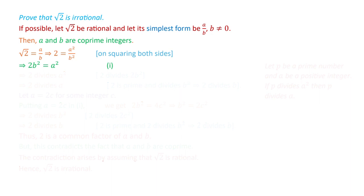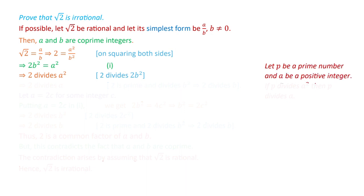Now, look at the term 2b squared — clearly it is divisible by 2. So if 2b squared is divisible by 2, it means 2 divides a squared. From our previous lemma, if p is a prime number and p divides a squared, then p divides a. In this case, 2 is prime and 2 divides a squared, so this implies that 2 divides a.